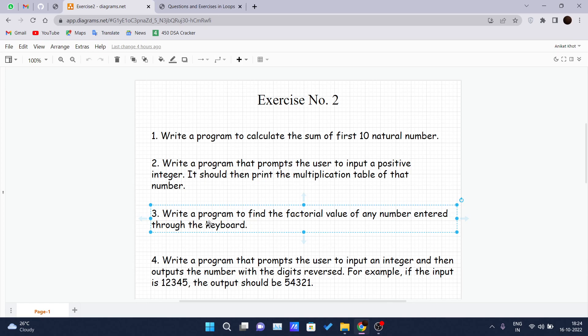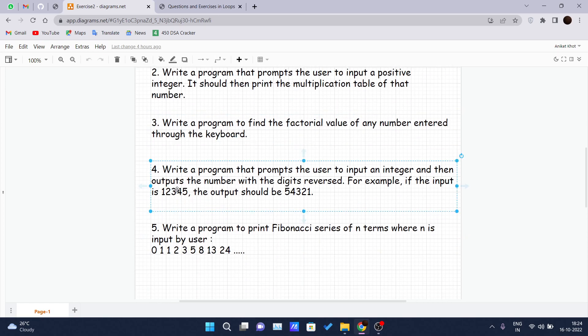Fourth: write a program that prompts the user to input an integer and then output the number with the digits reversed. What does it mean? Here you can see the example: 12345 is there, and the output you should give to the user is 54321—just the reverse of the number given by the user.